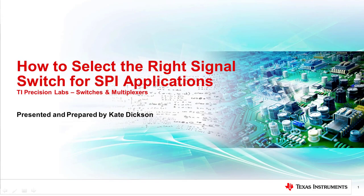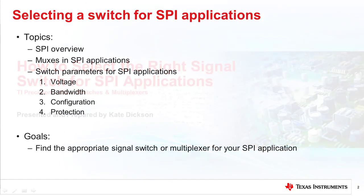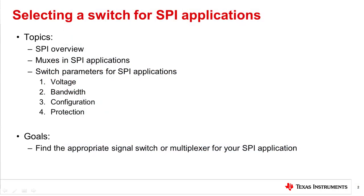Hello and welcome to the TI Precision Labs Switches and Multiplexers series. In this video, we will discuss SPI protocol and how to select the right signal switch for SPI applications. We will start with an overview of the SPI protocol, then discuss how MUXs can benefit your system in SPI applications, and highlight the important features to consider when choosing a MUX or switch for SPI. These key considerations are voltage, bandwidth, configuration, and protection features.